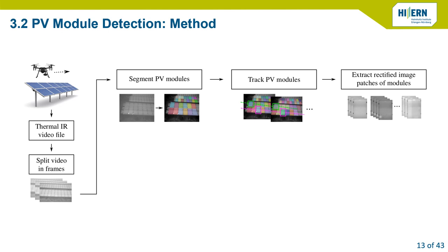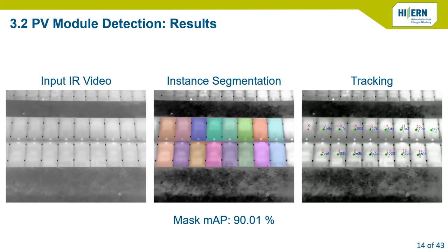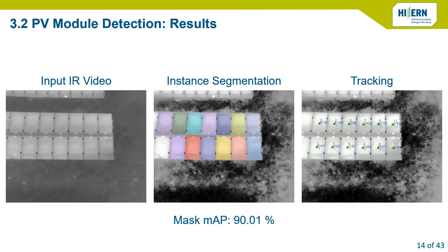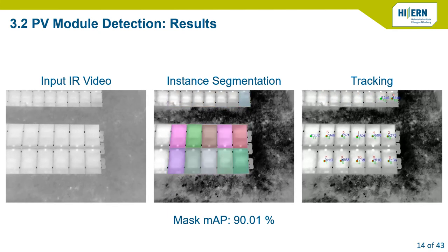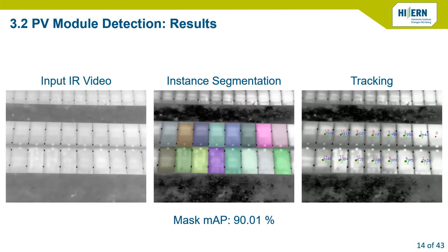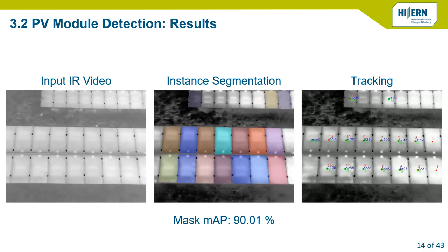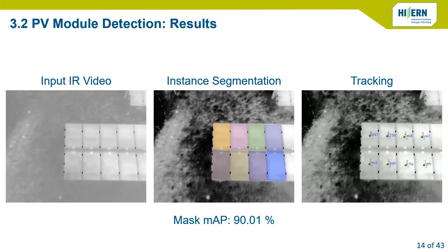Having multiple patches per module allows more advanced analytics downstream, filtering out sun reflections that may occur, and making more accurate predictions. In the tracking video, the blue tracking numbers stay constant over the visibility of each respective module. Overall we achieved a mean average precision of about 90%. The masks are accurate enough to allow us to skip any kind of post-processing — we work directly with the output of Mask RCNN. Introducing post-processing would introduce heuristics again that we're not sure would generalise well.